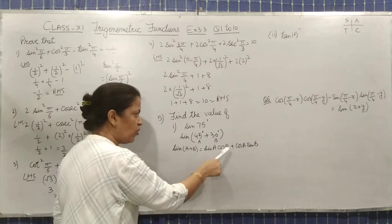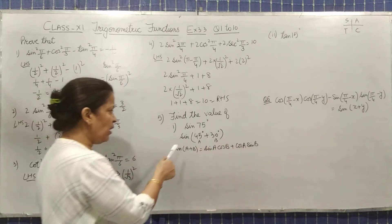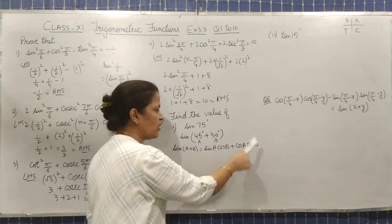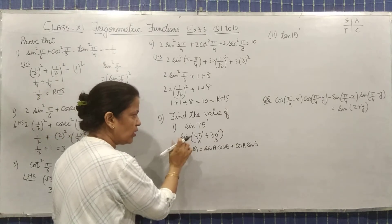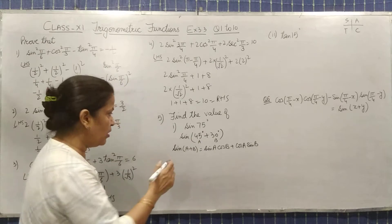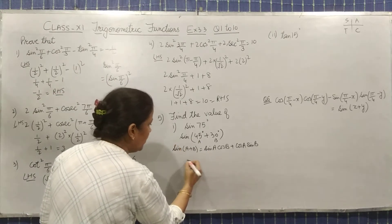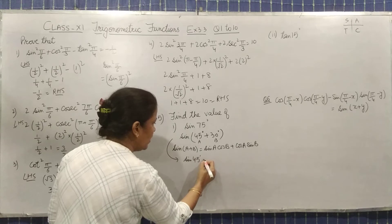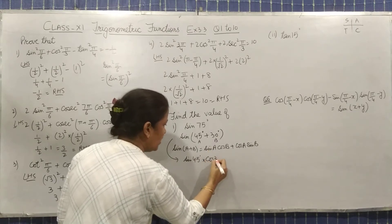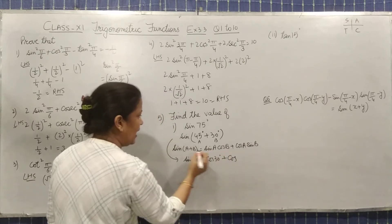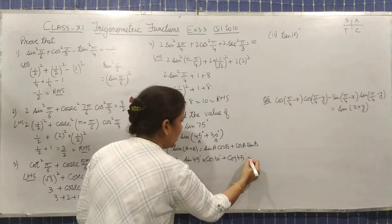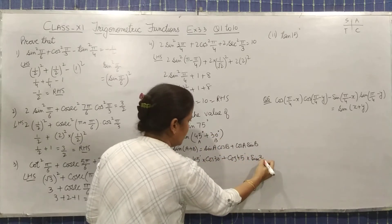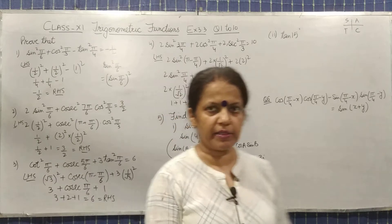Using the identity sin(A + B) with A = 45° and B = 30°, it becomes: sin(45°)·cos(30°) + cos(45°)·sin(30°). Now substitute the values from the trigonometric table to get the answer.